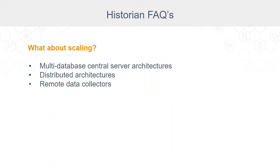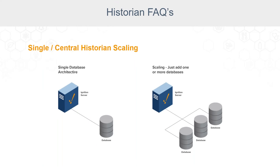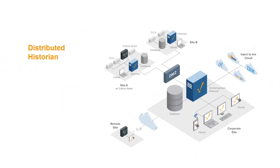What about scaling? Multi-database architectures are simple and easy to set up. We have the gateway network, which allows communication over from one server or from multiple servers, and distributed architectures are a possibility. For a single central historian, scaling means multiple databases on that central system. The distributed historian approach has data split across multiple locations — you might have data at each site, with summary data coming back to central, and the gateway network allows querying over remote connections for centralized reporting and dashboards.